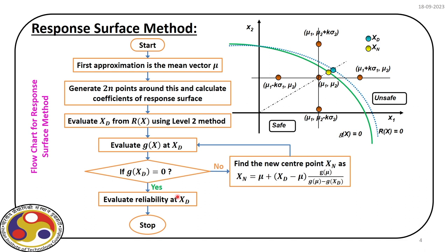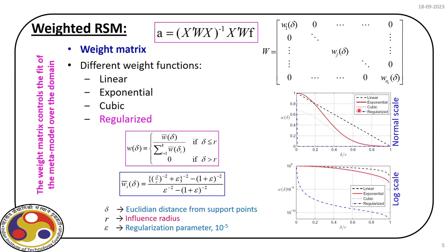Fitting a global response surface is not always recommended because the resulting limit state may have large modeling error. That is where the moving least square based approach comes in — it is helpful for mapping the limit state over the complete domain. The weight function is varied to assign different weights at different locations, controlling local error and improving the local fit. Different weight functions are available: linear, exponential, cubic, and regularized; we prefer regularized because of certain properties.